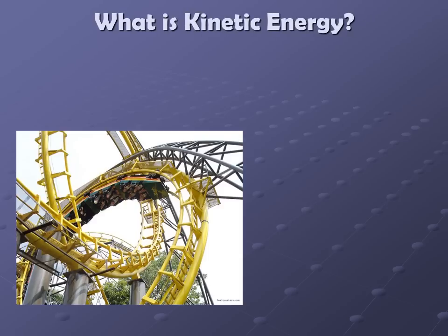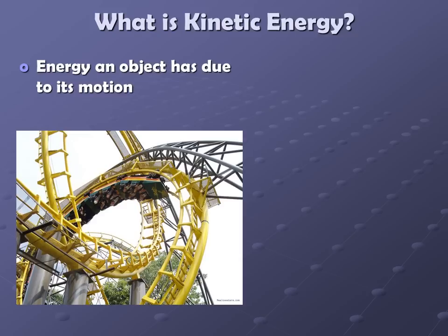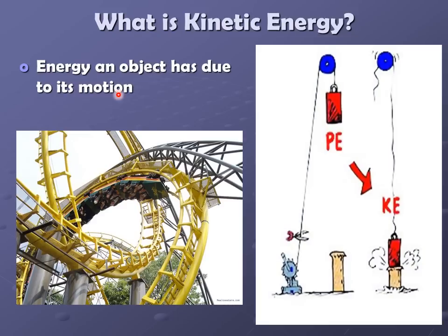If we switch over to kinetic energy, the big giveaway here is motion — energy of an object because of its motion. So if we go back to that weight hanging from the pulley system: when it's just hanging at the top, it has potential energy, it has stored up energy. That changes to kinetic energy when it's in motion — when it's actually moving, we call it kinetic energy. And it got that kinetic energy from the potential energy that was stored up.